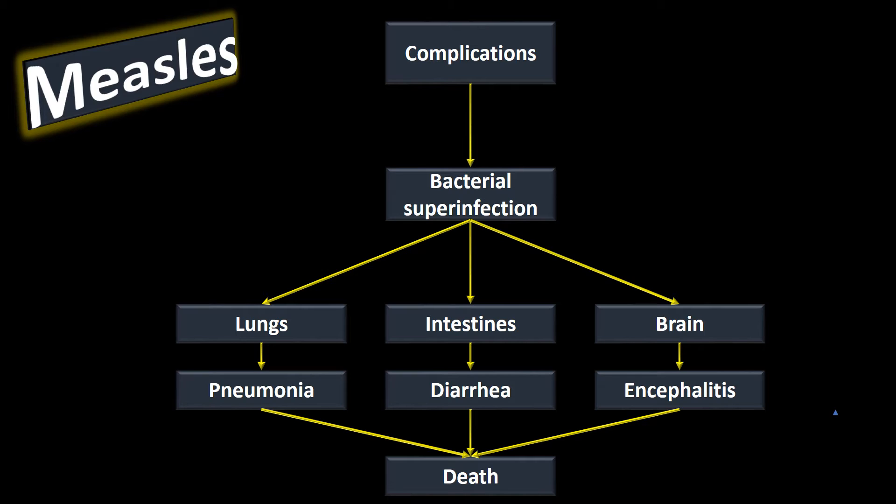Looking at WHO 2015 numbers, there were 195,762 reported cases of measles and an estimated 134,200 deaths due to measles. It's still a significant cause of death. Immunizations have really driven down the mortality rate, but measles is still prevalent, especially in the developing world.